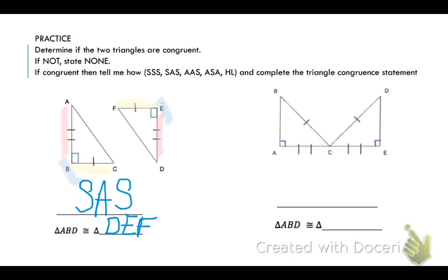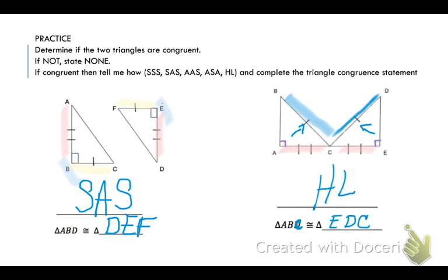Now in my last set here, I again have two right triangles. The sides opposite the right angles — which are my hypotenuses — are congruent. And I have one leg of each, CE and CA, that are congruent. So I know these two triangles are congruent using hypotenuse leg — triangle ABC is congruent to triangle EDC.